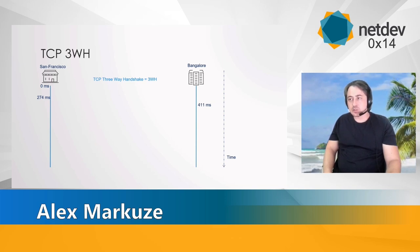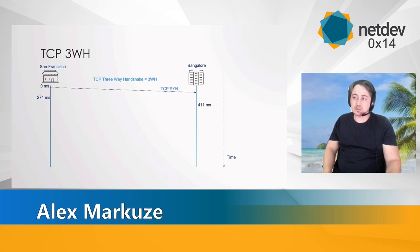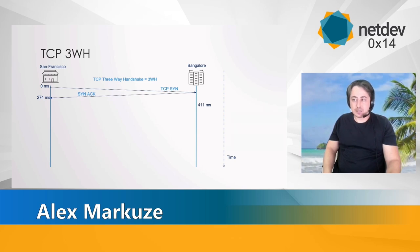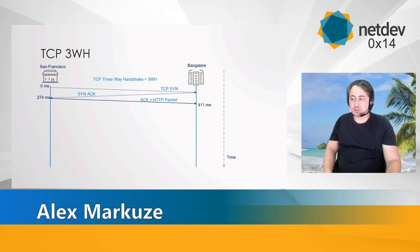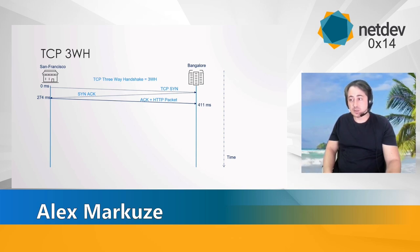In order to establish a TCP connection, three packets must be exchanged — namely a SYN packet from the client, a SYN-ACK from the server, and finally a client ACK and any possible data going back to the server. This is known as the TCP three-way handshake. For example, establishing a TCP connection between San Francisco and Bangalore takes about 411 milliseconds.